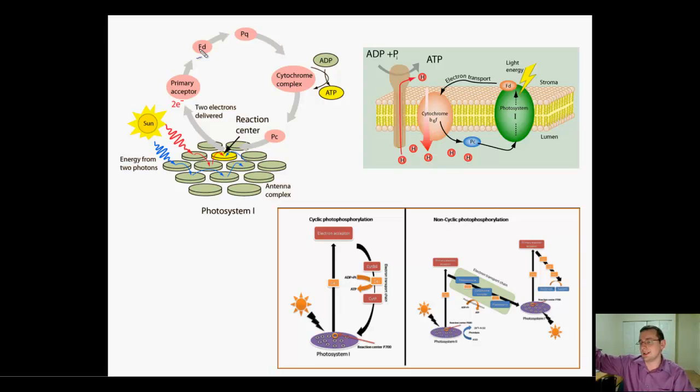That's what happens during non-cyclic photosynthesis. But in this case, instead of going towards NADPH, the ferredoxin throws those electrons to plastoquinone. When plastoquinone gets charged, it picks up two hydrogen atoms from the stroma